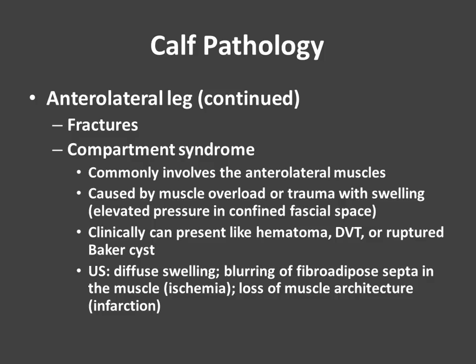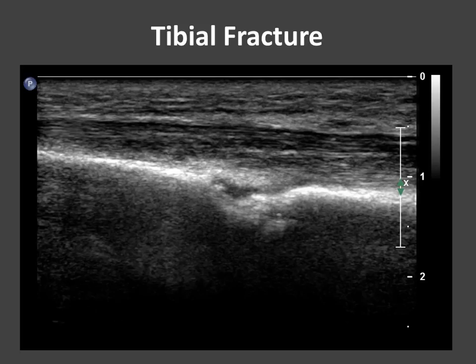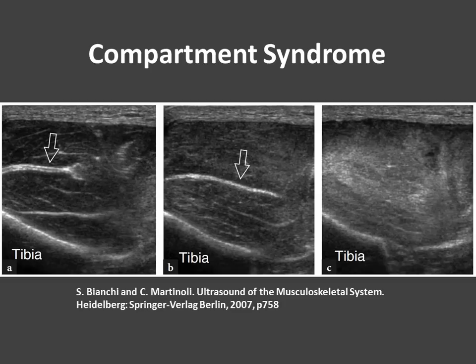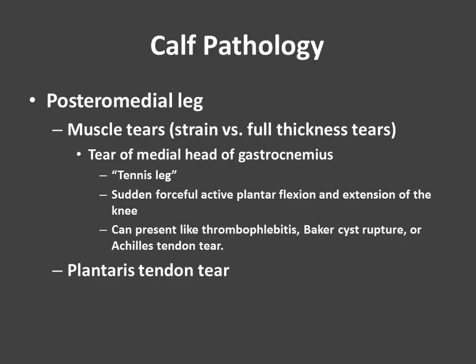We can also see fractures, and ultrasound is useful for the evaluation of compartment syndrome. Compartment syndrome commonly involves the anterolateral muscles and is caused by muscle overload. These patients can present like hematoma, DVT, or ruptured Baker's cysts — and often that's how the evaluation will occur. On ultrasound, we'll see diffuse swelling, blurring of the fibroadipose septa, and loss of muscle architecture. Here's an image of the anterior tibia with cortical disruption — a fracture. And then here's an image from Bianchi and Martinoli's book showing progressive images from caudal to cranial, demonstrating loss of normal fibroadipose septa and disruption of normal muscle architecture.